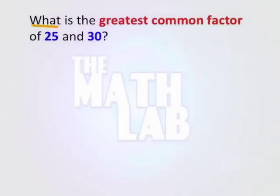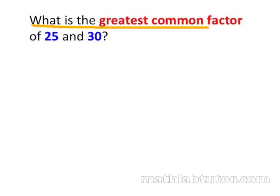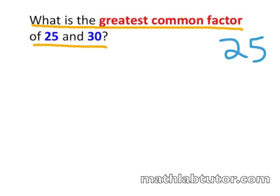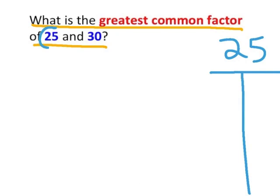In this problem we are being asked: what is the greatest common factor of 25 and 30? In order to solve this problem, we must begin by listing all of the factors of both 25 and 30. Factors are simply numbers that we multiply together in order to get another number. So what numbers could we multiply together that are going to give us 25?